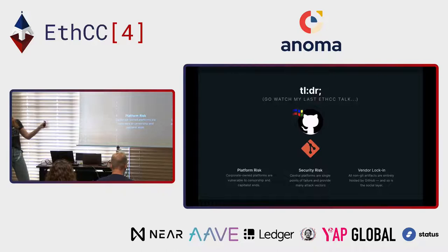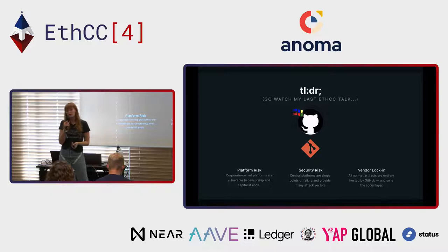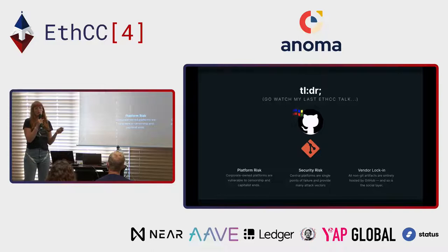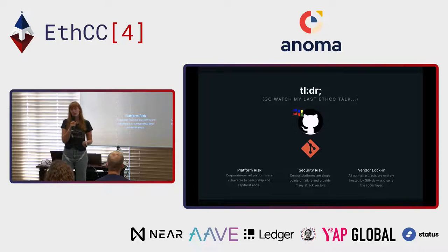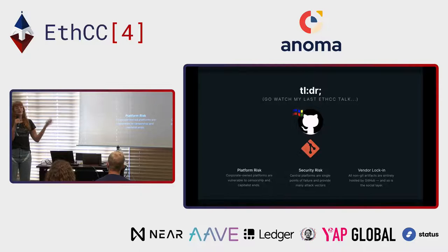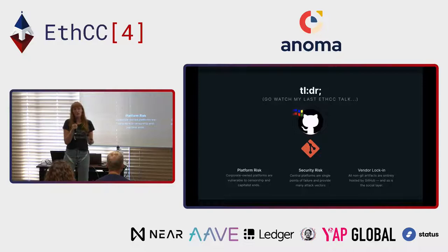The TLDR of why centralized code collaboration is a problem: at the end of the day, GitHub is another walled garden. GitHub is a hosting service for Git repositories built on top of Git — so it's a walled garden built on open soil. Git is a free and open source distributed version control system designed to be completely decentralized. And GitHub actually built a proprietary platform on top of that open protocol, similar to all the other walled gardens we're trying to break down in the Web3 ecosystem. GitHub experiences the issues that come with being a centralized, censorable, and corporate-owned platform.